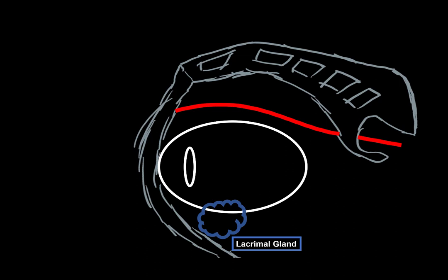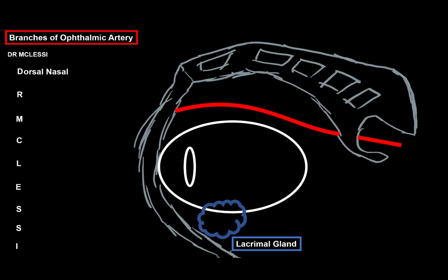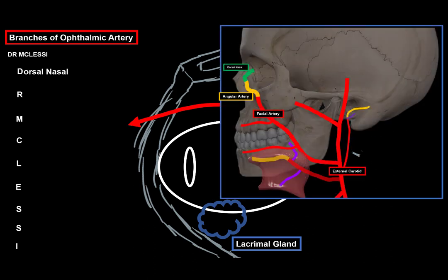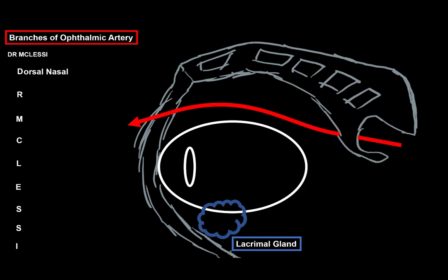Now the ophthalmic artery goes through the optic canal and stays on the medial side of the eye. For the branches, I like to use Dr. McClessy as a mnemonic, arranging them like this. Next, our first branch is the dorsal nasal. Now the dorsal nasal artery is more of a terminal branch of the ophthalmic artery. It goes out at the medial corner of each eye and then communicates with the angular artery, as you see here, which comes from the facial artery of the external carotid.